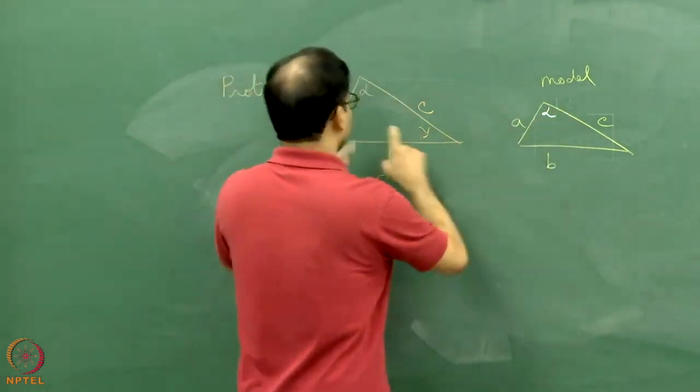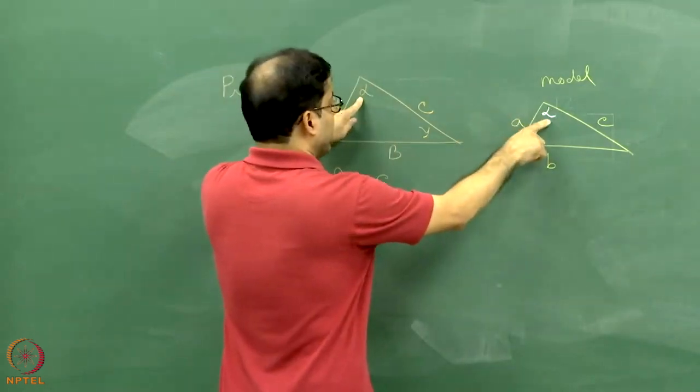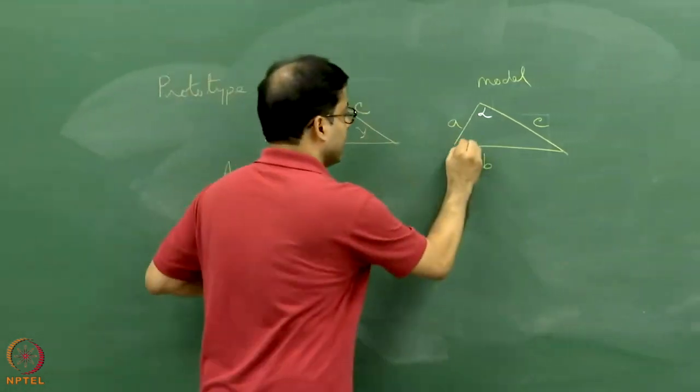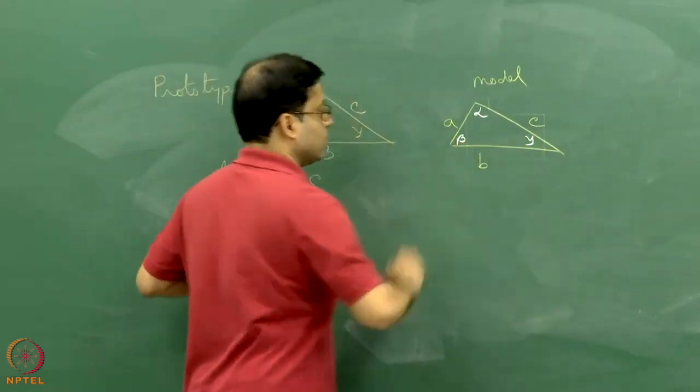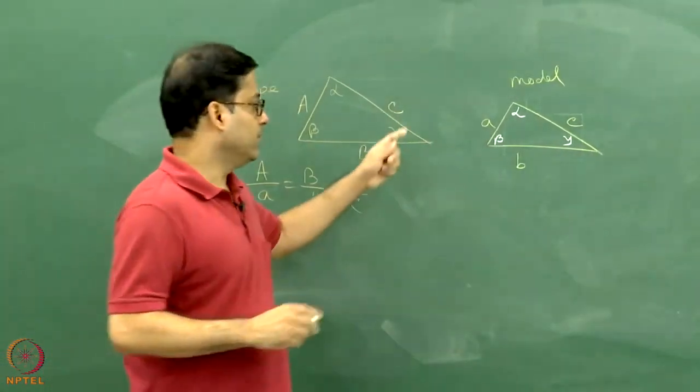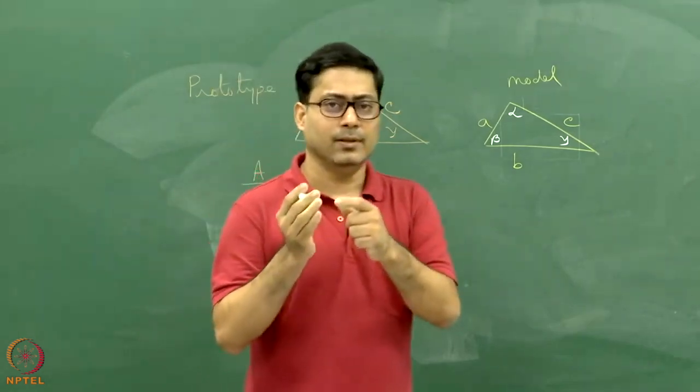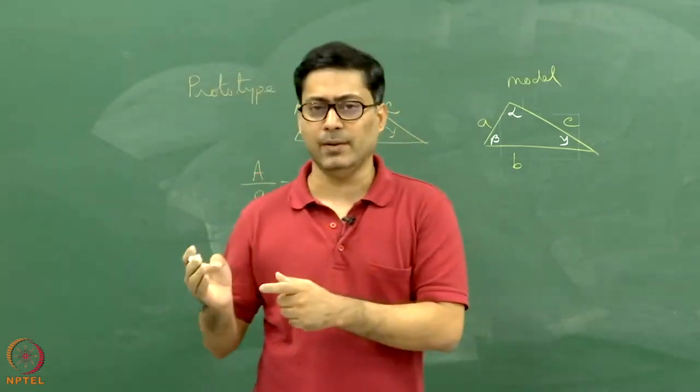This angle has to be same as alpha. Don't change the angle. No ratioing is done. This is beta, so this has to be beta. That angle has to be gamma. So with lengths we are doing the ratioing, but with angles we keep things as it is between the prototype and the model.